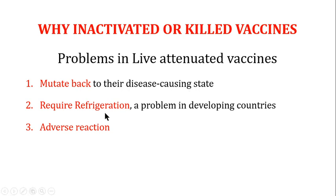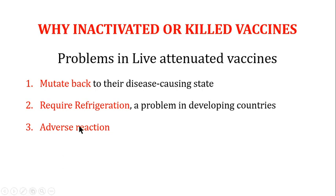Another problem with live attenuated vaccines is that they require refrigeration, which is a problem in developing countries. The third and most important problem is that live attenuated vaccines can cause adverse reactions in some individuals. Keeping in view these problems, the inactivated or killed vaccines are made for cases where live attenuated vaccines create these kinds of problems.